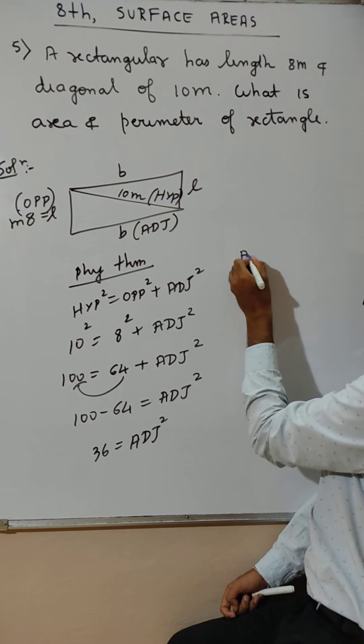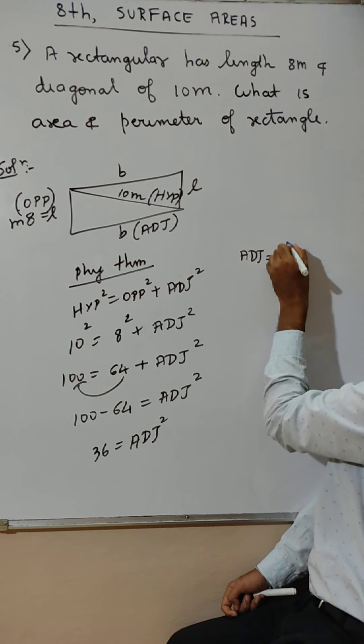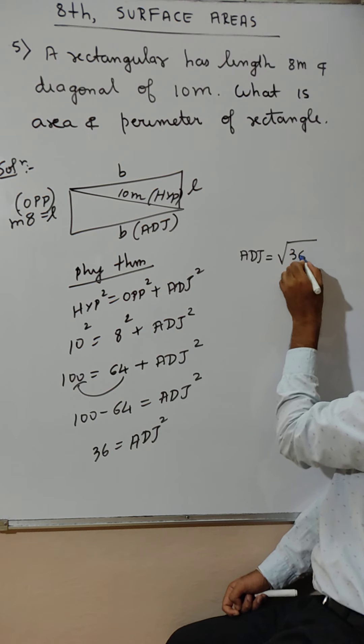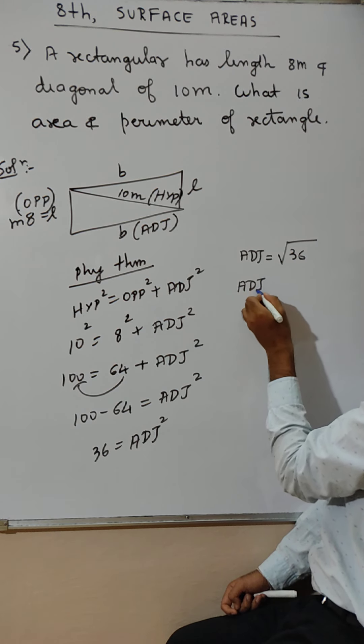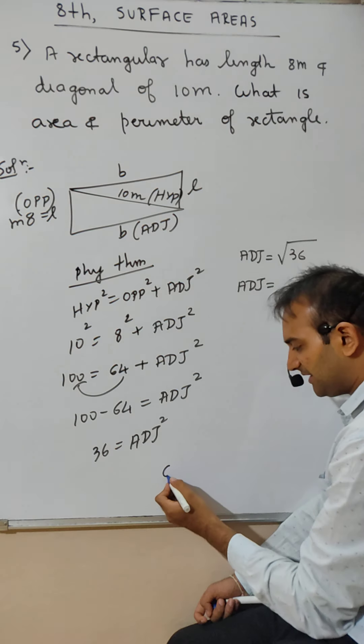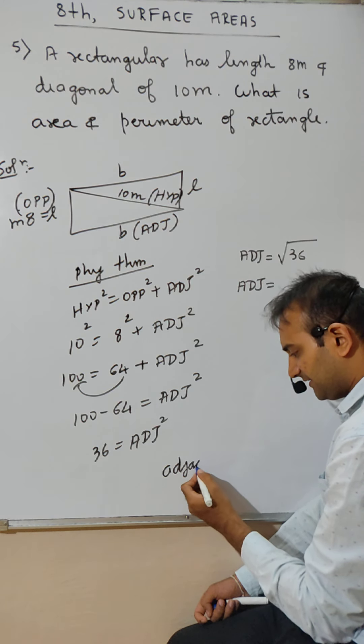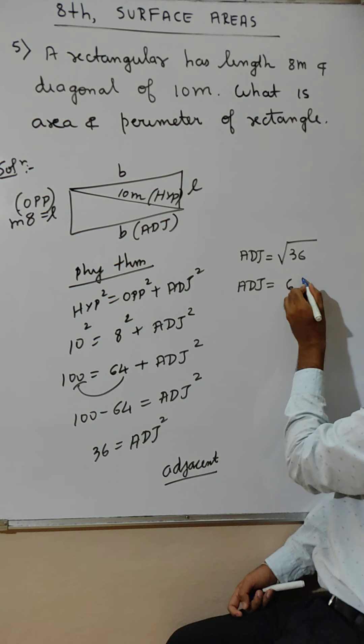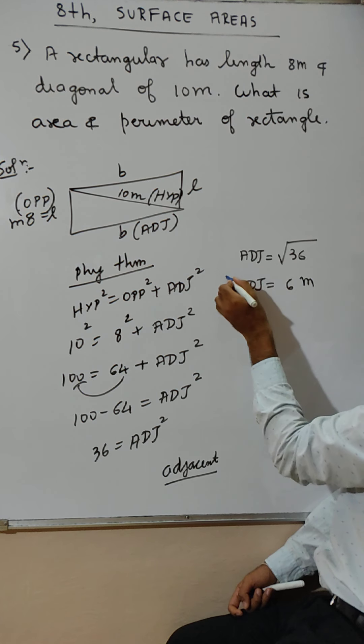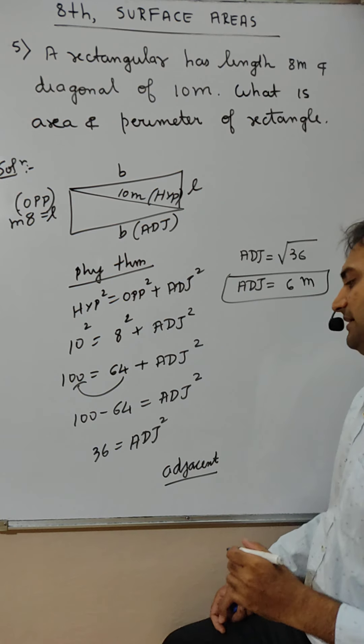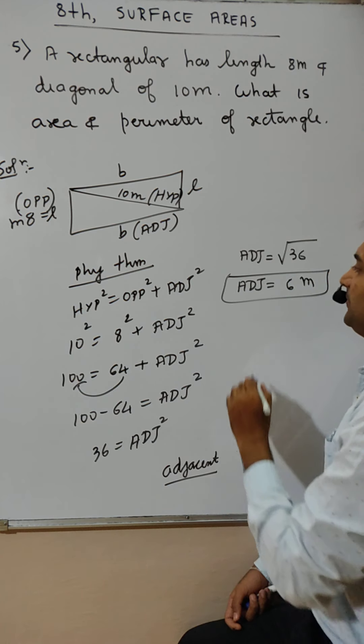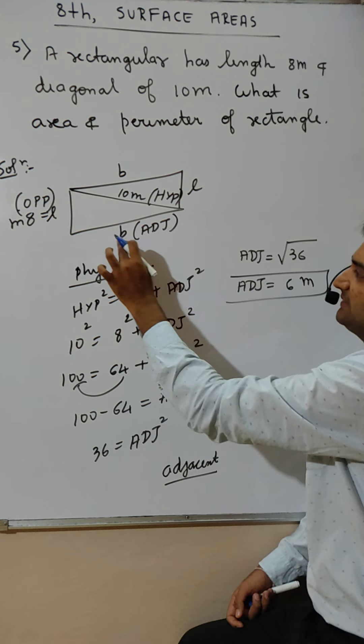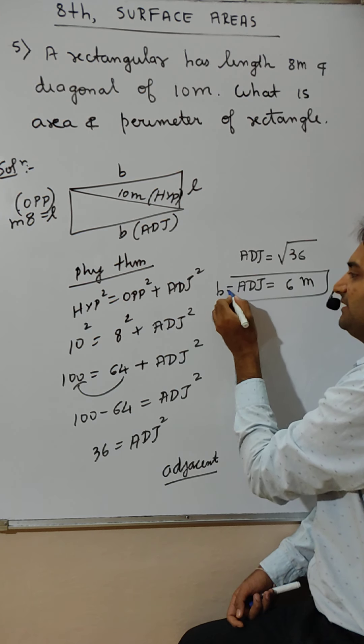Toh adjacent. Adjacent is square root of 36. So adjacent, me short cut liga. Adj. Real me kya hai? Adjacent hai. Okay. Square root of 36, 6 meter. Correct? Aya samaj me. Kyunki adjacent kya hai idar? Adjacent breath hai. Breath is adjacent.